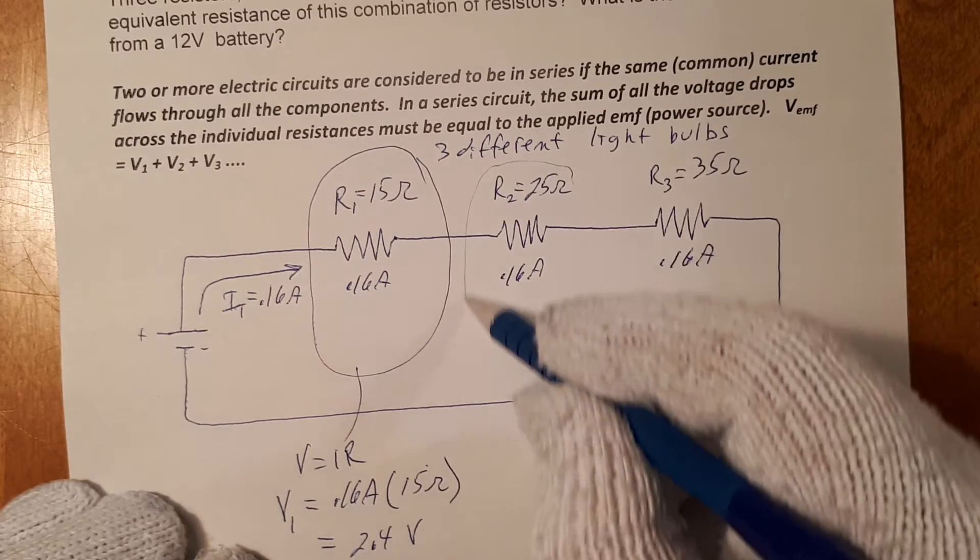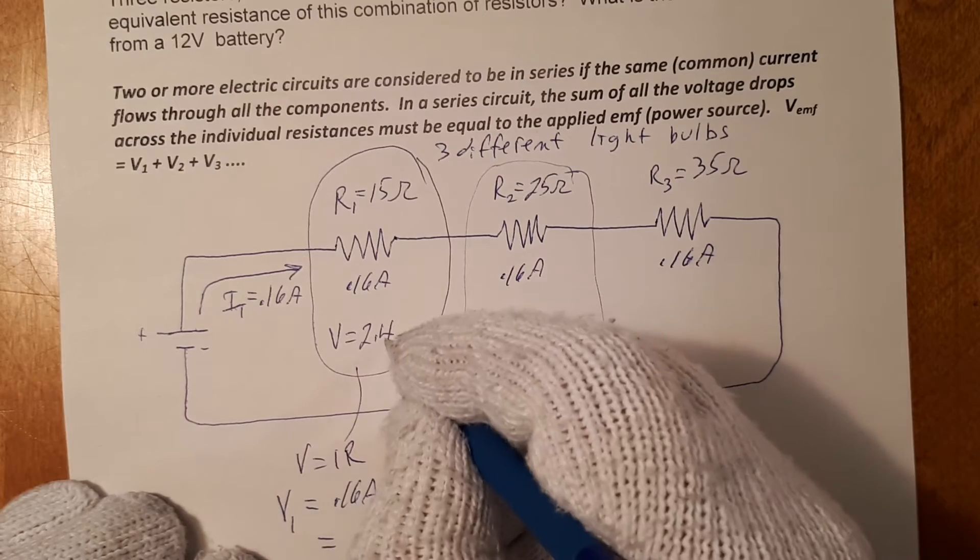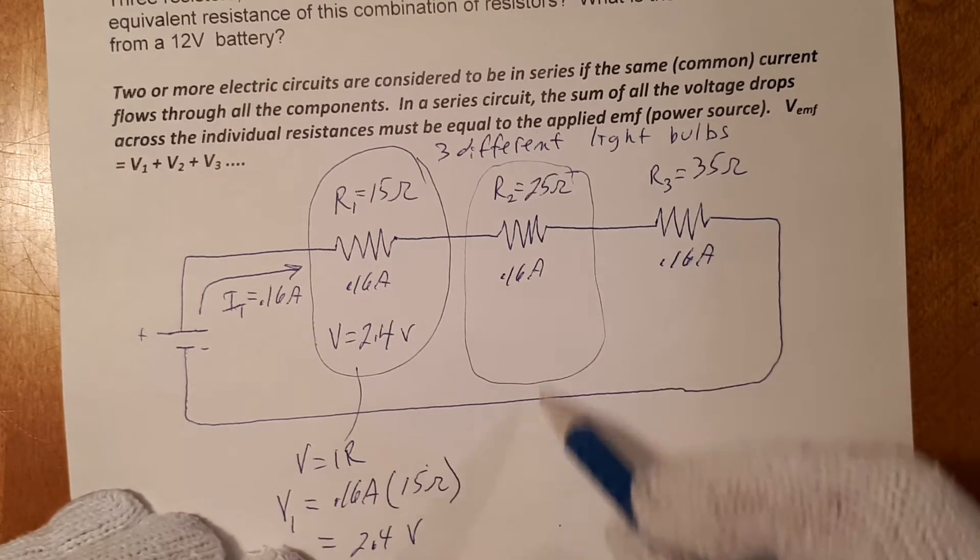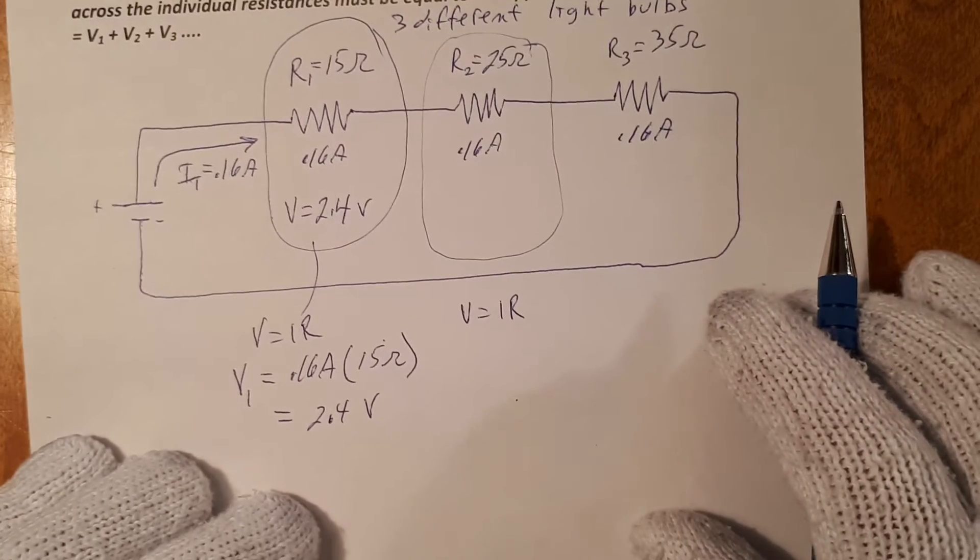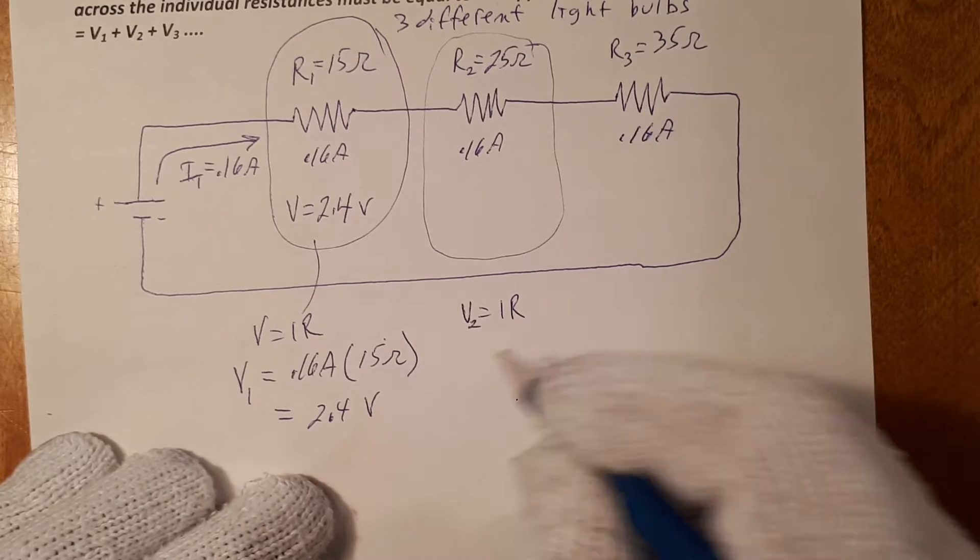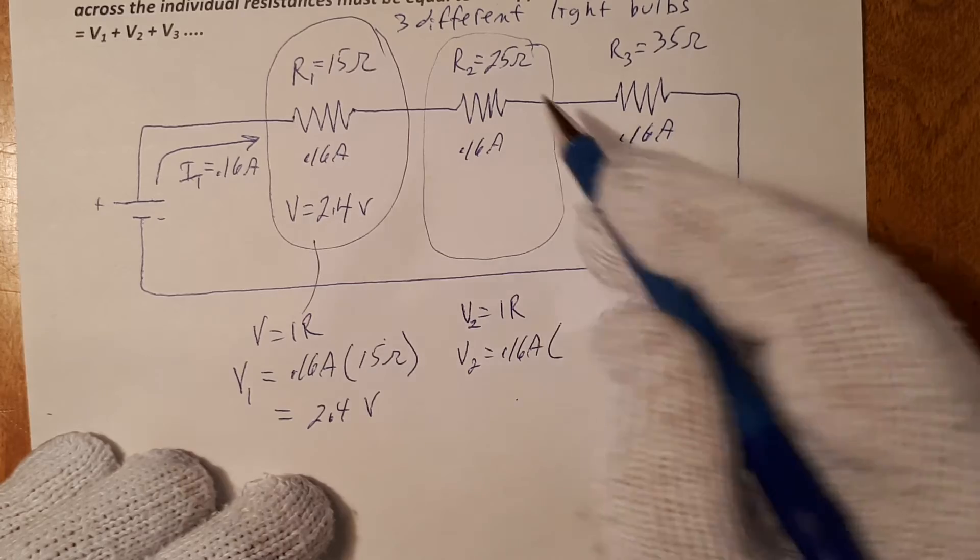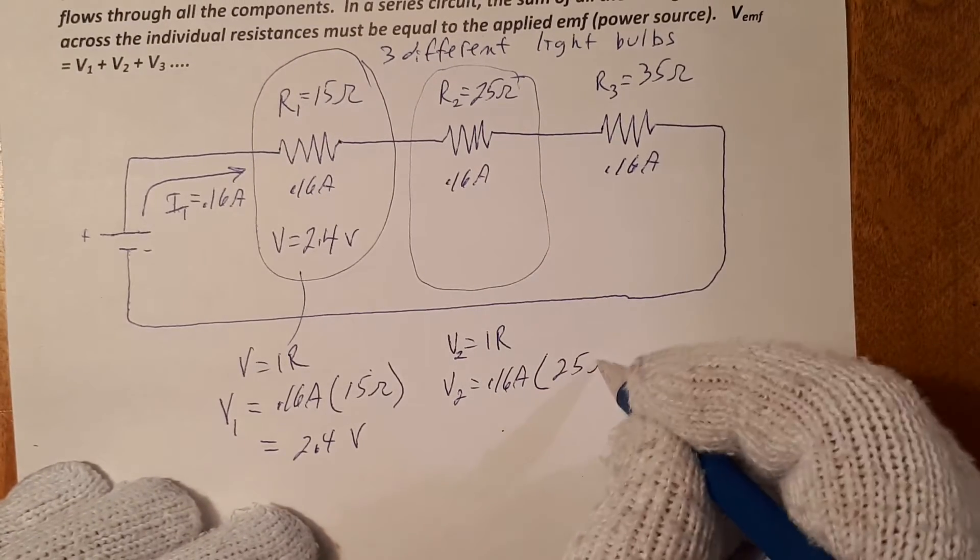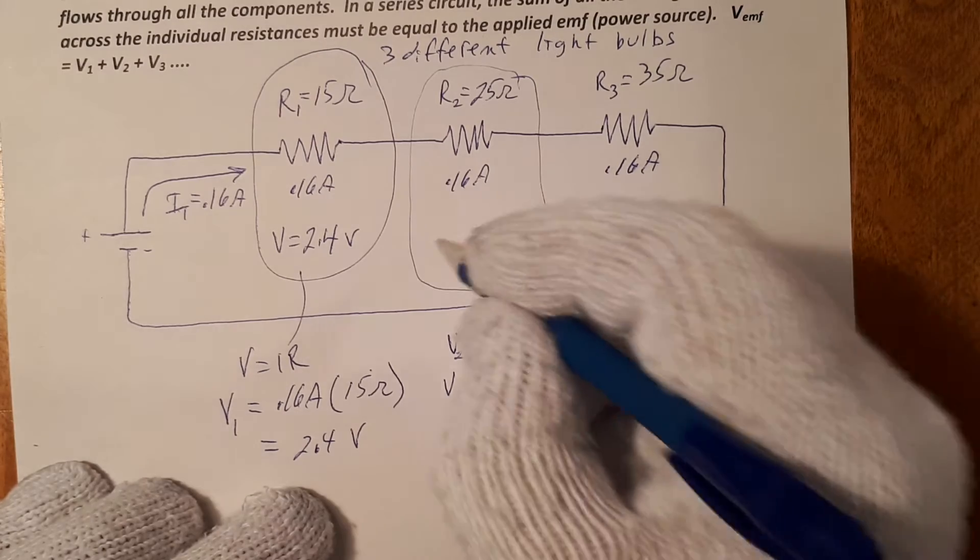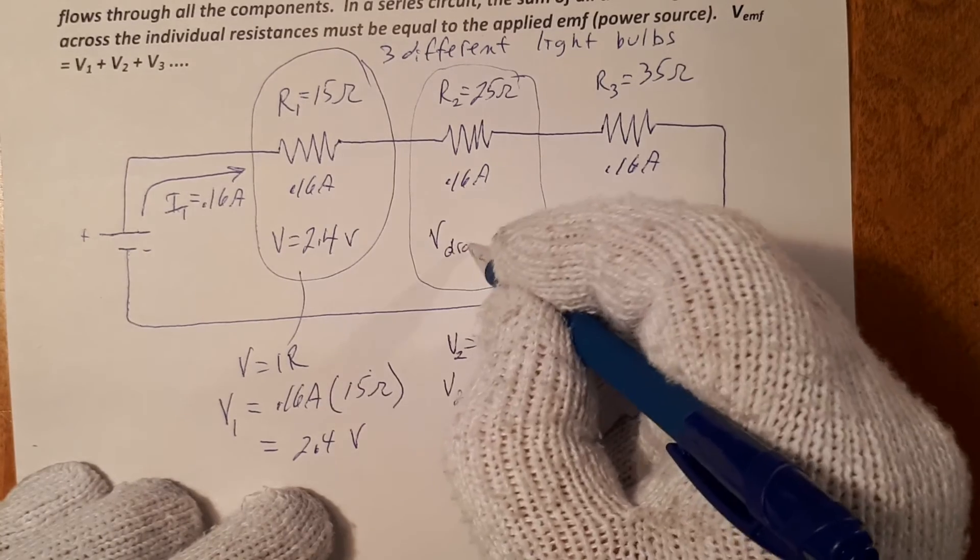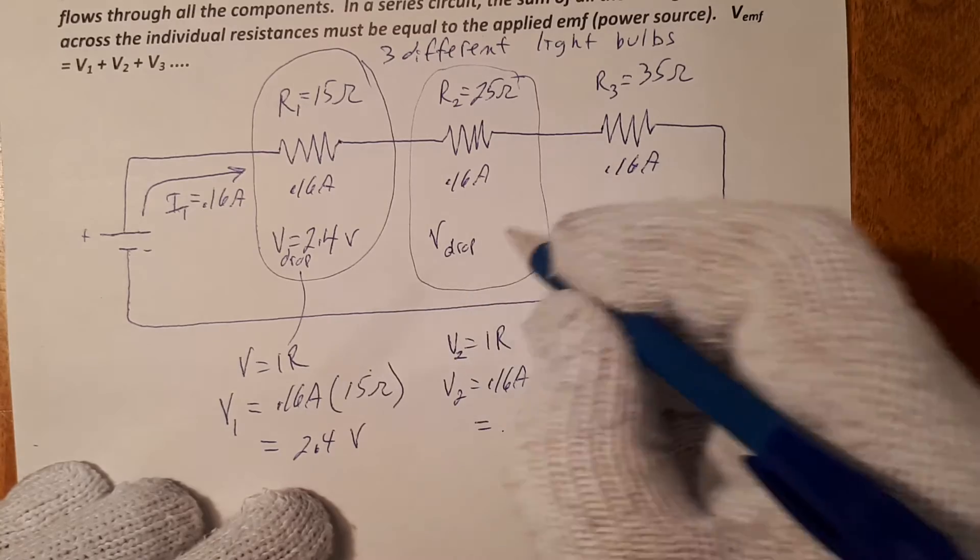And we can do the same thing here. Consider this one here. So the voltage drop is IR. This is Ohm's law. We'll call this one V2. V2 is equal to the same current, 1.6 amps, times the resistance of 25, and that is equal to 4 volts. So the voltage drop, or the voltage being used here, is 4 volts.